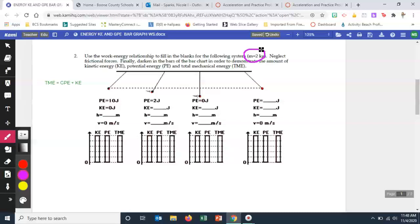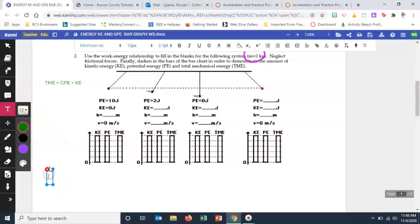And then finally, we are going to fill in our bar graphs to show how the relationship between kinetic and potential energy are always present. The law of conservation of energy states that energy is not created or destroyed, it just transfers back and forth. And so I'm going to show you how that looks today with using this pendulum here.